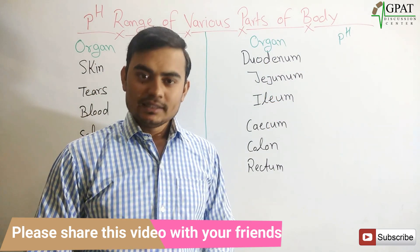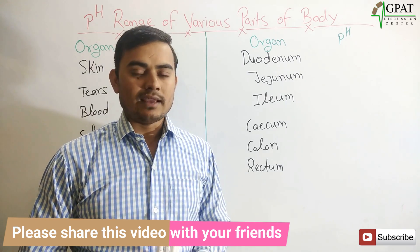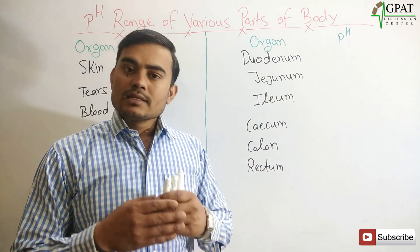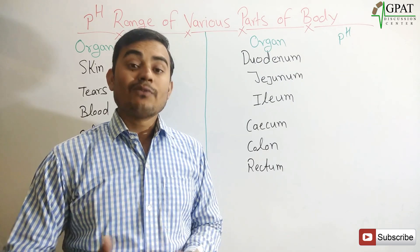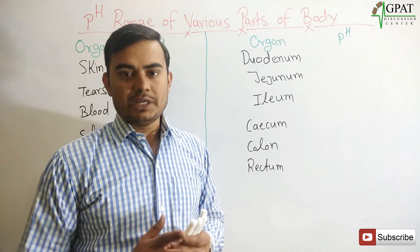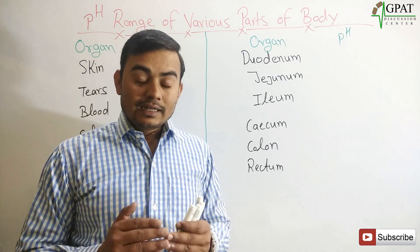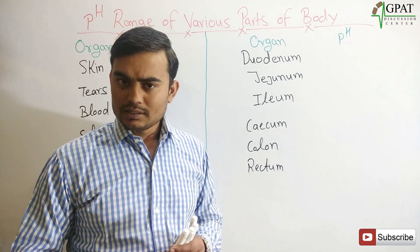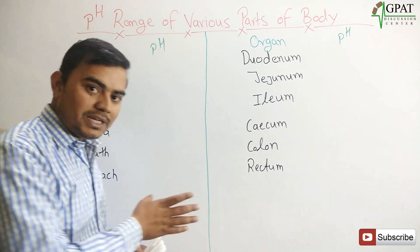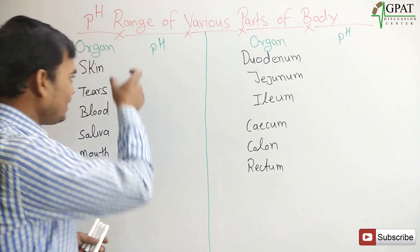Hello friends, welcome back. In today's video lecture, I am going to discuss a very basic topic: the pH of the various parts of our body. Every organ has its own fixed pH range, and if the pH of that organ changes, then some adverse effects, some toxicity, or some disease will be developed. So these pH ranges are very important for the proper functioning of that organ. I will take them one by one.